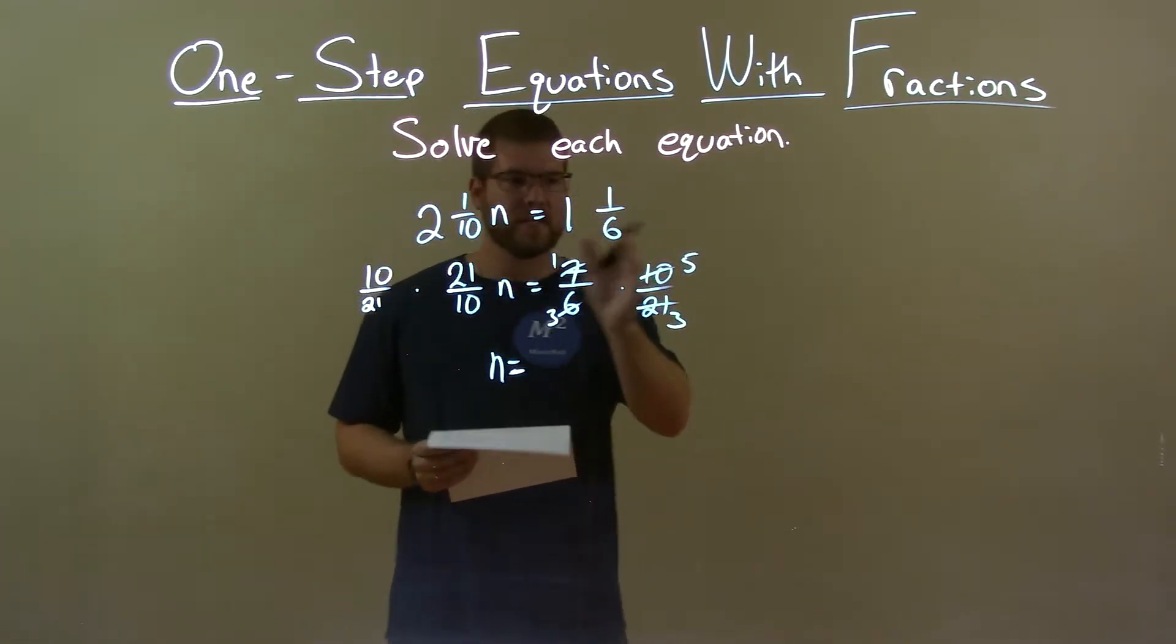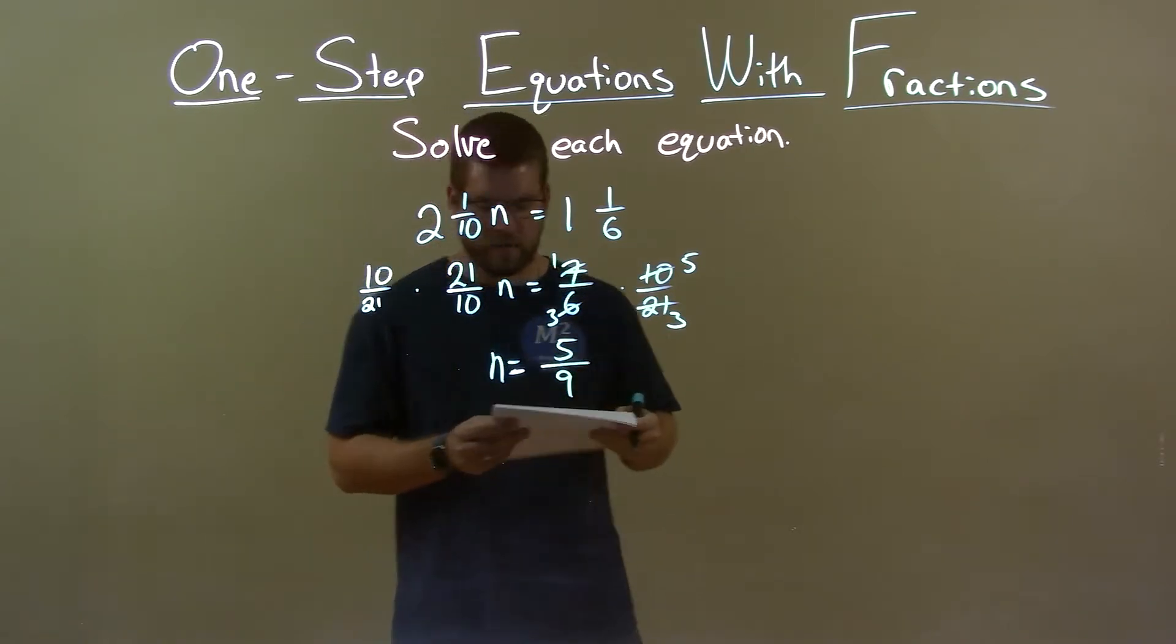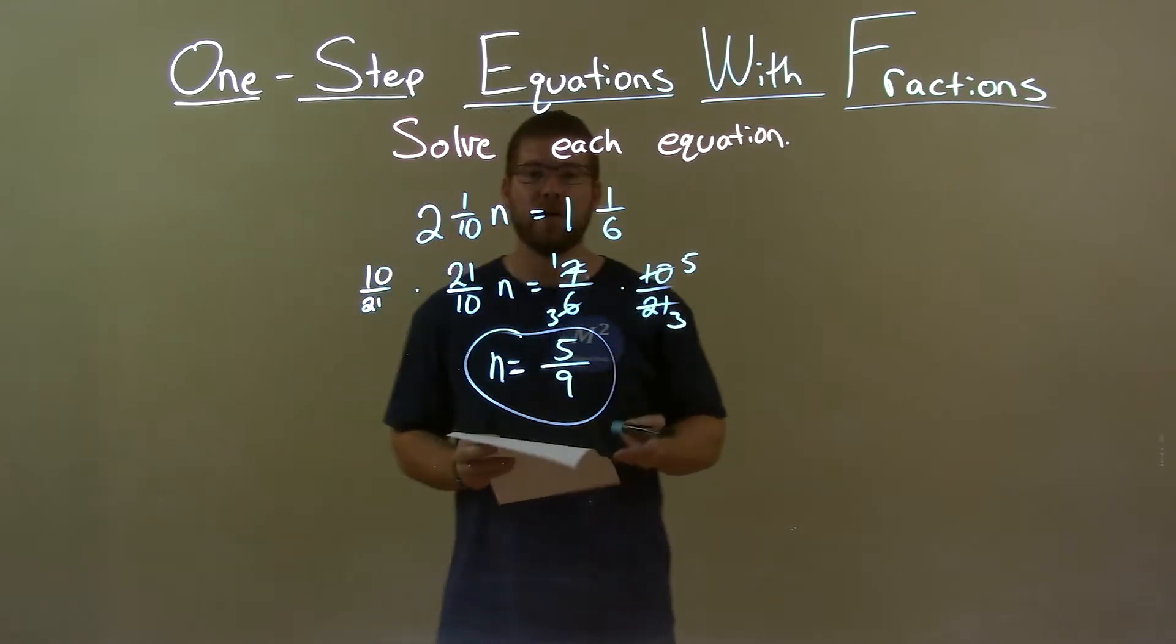And so we're left with, well, 1 times 5 is 5 and 3 over, 3 times 3 is 9. So n equals 5 ninths. And that's it. Our final answer. n equals 5 ninths.